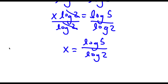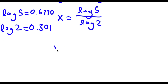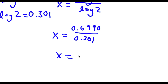Now the value of log 5 is equal to 0.6990, and the value of log 2 is equal to 0.301. So now I have x is equal to 0.6990 over 0.301. And if I divide these two, I get x is equal to 2.32. So this is my answer.